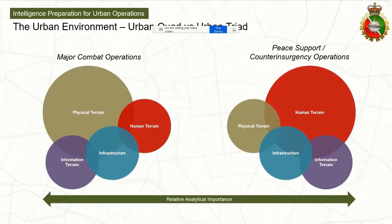The urban environment: the urban quad versus the urban triad. The urban triad has been in doctrine for quite a while. The NATO urbanization capstone project added a fourth component to create an urban quad, and that's the information terrain. We can definitely have a conversation about whether information terrain is a distinct feature of the urban environment or a feature of all environments.